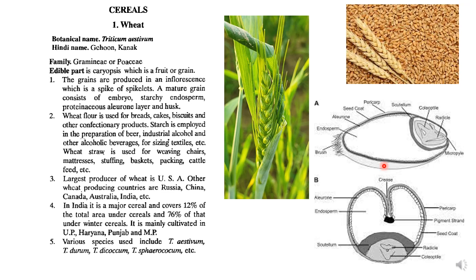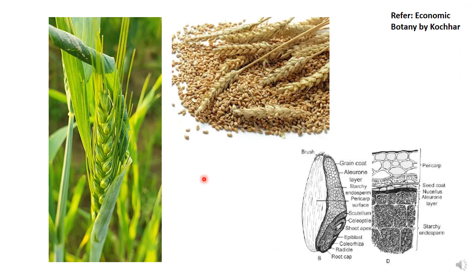In India, wheat is mainly cultivated in UP, Haryana, Punjab, and Madhya Pradesh. Various species of wheat include Triticum aestivum, Triticum durum, Triticum dicocum, and Triticum sphaerococcum. Triticum aestivum is a hexaploid species, Triticum durum and dicocum are tetraploid, and then there is Triticum sphaerococcum.